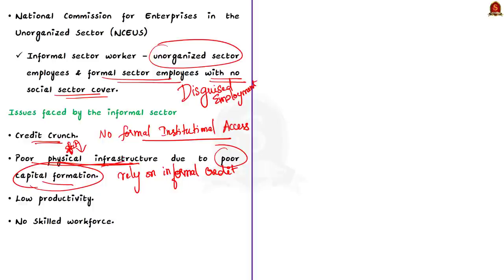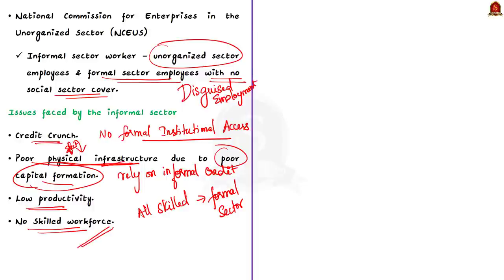The informal sector is also marked by very low productivity. Finally, there is no availability of skilled workforce. In India, all the skilled workforce tends to move towards the formal sector, so there is a lack of availability of skilled workers for the informal sector. These are the main issues faced by the informal sector.